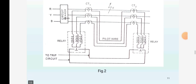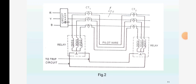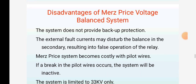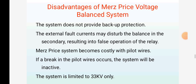It has a few advantages. This system can be used for ring mains as well as parallel feeders. This system provides instantaneous protection for ground faults. It also has a few disadvantages of the Merz-Price voltage balance system.